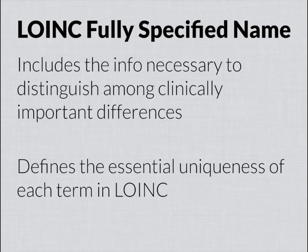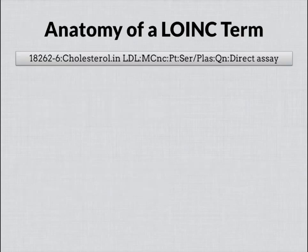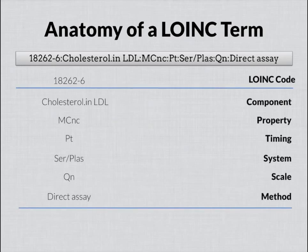Back when we started LOINC, the structure of how this name was created was informed empirically over time through iterations that distinguish among the things we want to distinguish from, and keep together the things we want to aggregate together. Overall, the LOINC term is broken down into six major axes, and we're going to walk through each one, but let me give an example so you can see how this works.